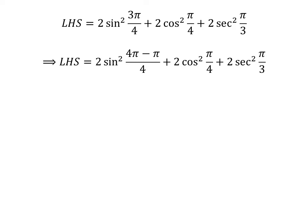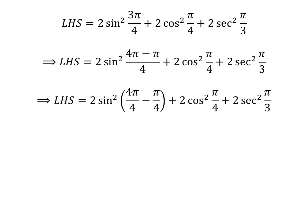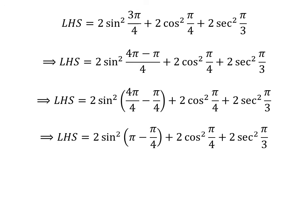As 4 minus 1 is equal to 3, the left hand side can be rewritten as 2 times square of sine of (4 times pi minus pi) upon 4 plus 2 times square of cosine of pi upon 4 plus 2 times square of secant of pi upon 3. We can express this as 4 times pi upon 4 minus pi upon 4, and cancelling the common factor 4, we get sine of pi minus pi upon 4.